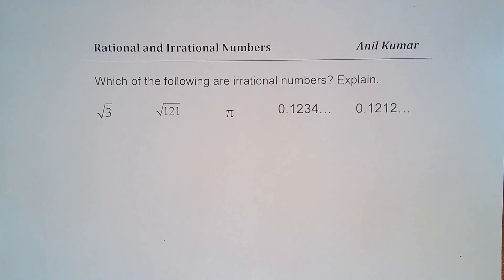We'll discuss in this video which of the following are irrational numbers and I'll try to explain why. I've taken five numbers here. All are real numbers. Square root 3, square root 121, pi,